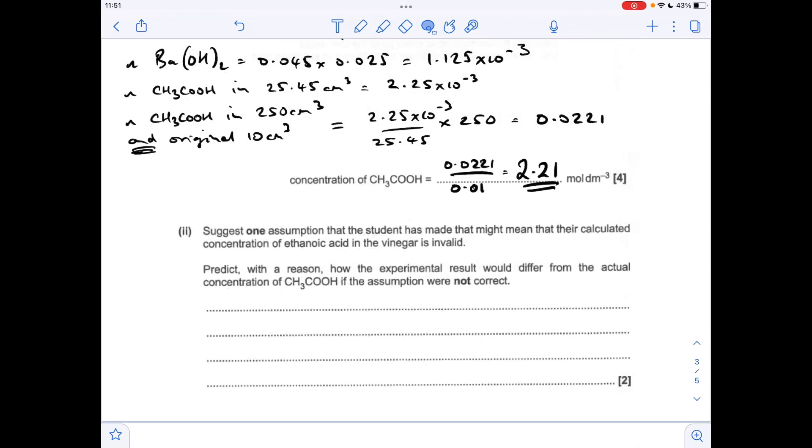Moving on to the next part. So one assumption the students made is that the only acid in the vinegar is ethanoic acid. So if there were other acids present in the vinegar, the actual concentration of the ethanoic acid is going to be less than what they've calculated.